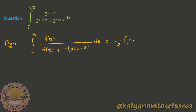You can use the formula in the form of integral a to b, where a and b are the limits of the integral. Now I identify f(x) in the numerator as 2^sinx. So I put f(x) = 2^sinx.